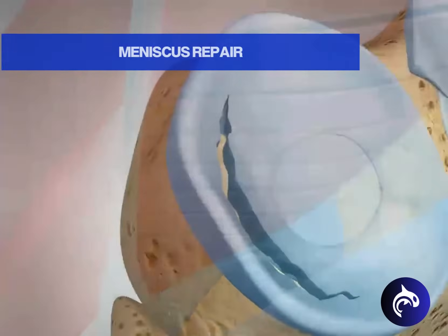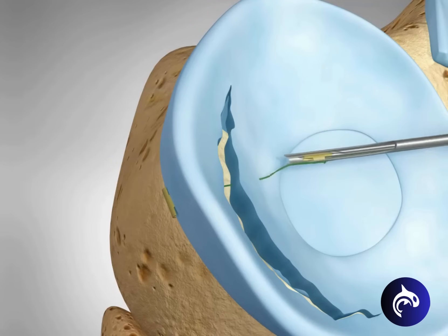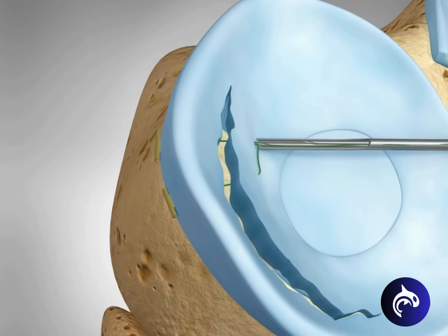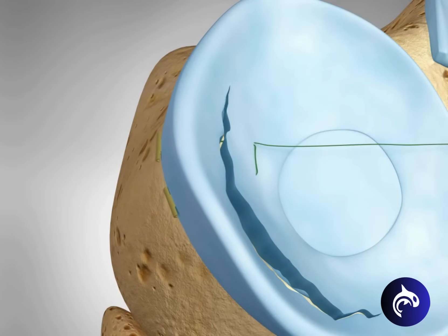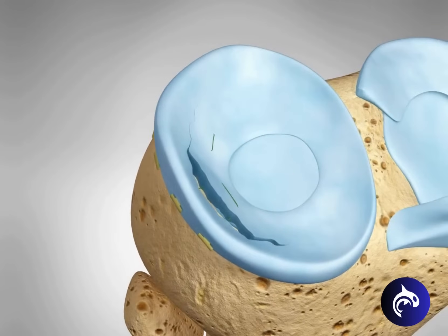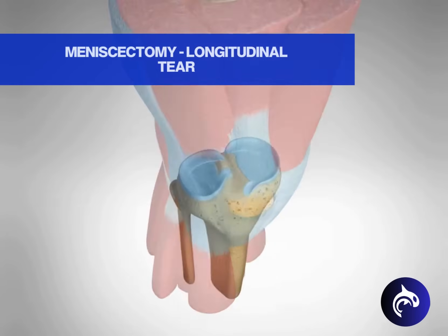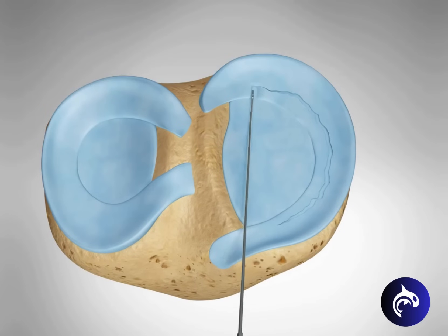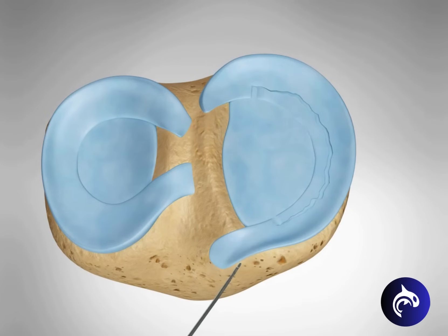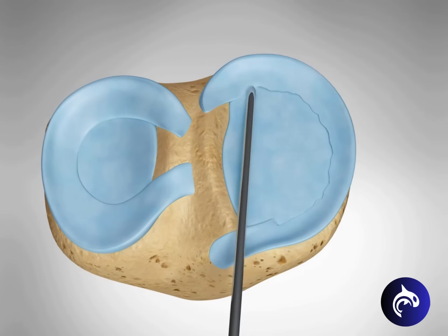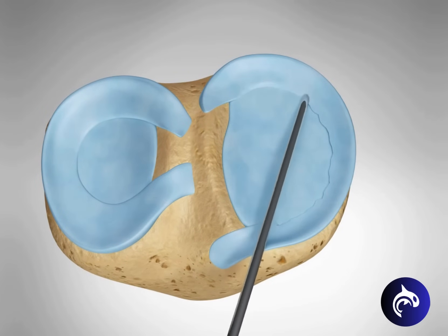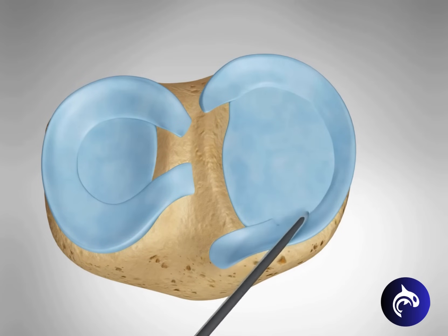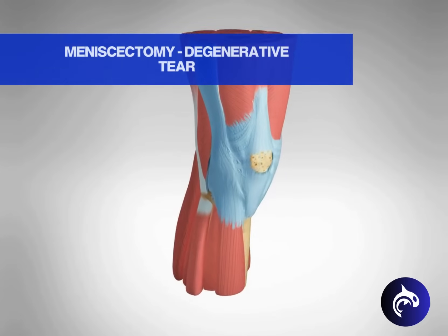If the conditions are favorable for a meniscus repair, the surgeon will sew the torn pieces of cartilage back together so they can heal on their own. In some situations, the torn meniscus cannot be repaired and a meniscectomy will be performed. The surgeon will trim away the torn meniscus tissue, then the edge of the remaining meniscus is shaved smooth.